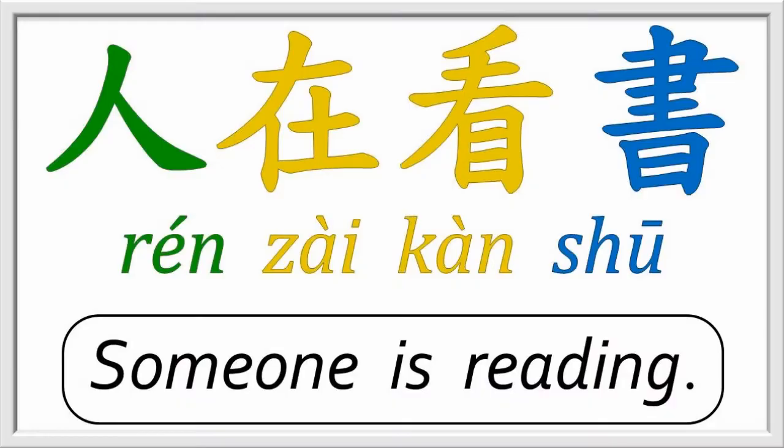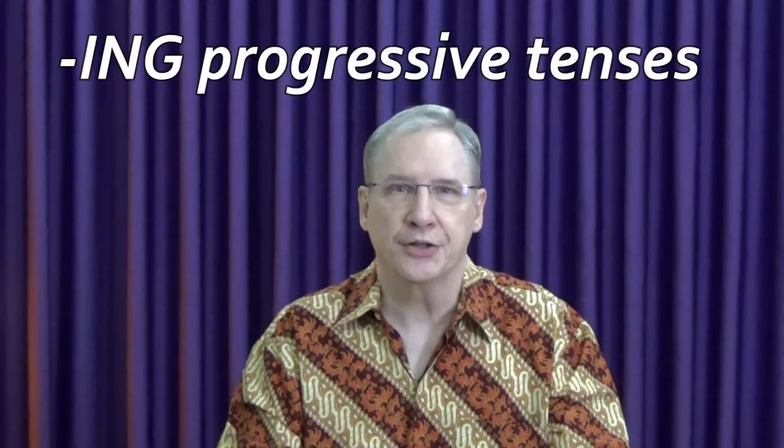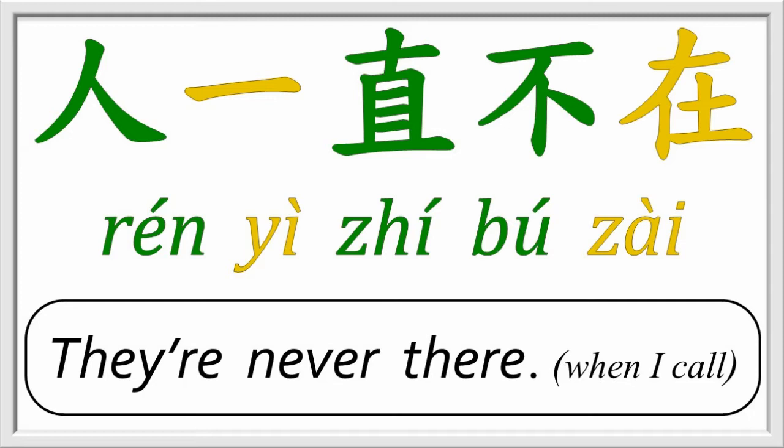For example, 人在看书 — someone is reading. As you can see, 人 is also used indefinitely to mean 'someone' or 'somebody.' Most useful is the English -ing progressive tense. 在 tells us the action is at that moment — past, present, or future, as the case may be. The next sentence is 人一直不在 — meaning that whenever I call, on the phone or in person, no one answers. They're never home, in the office, or wherever I'm calling.